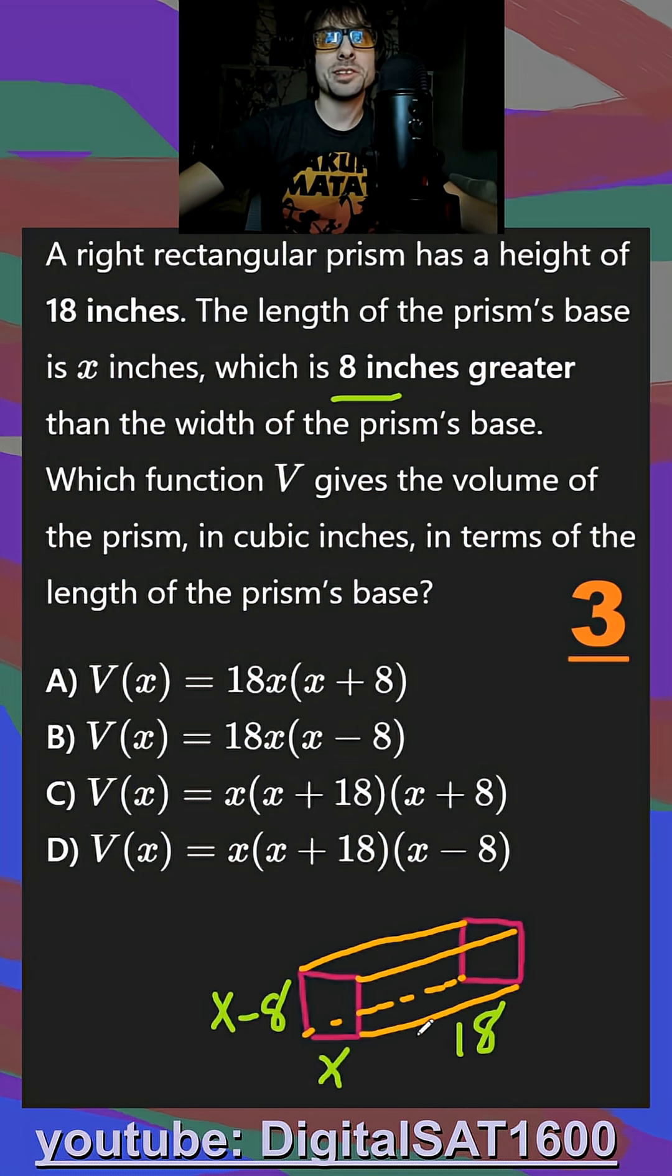So that's really the hardest part of this problem, you get your three sides designated. And then finally, they want the volume. Remember your volume is just side times side times side, so that's going to be 18 times x times x minus 8, and it looks like that's going to be answer choice B here.